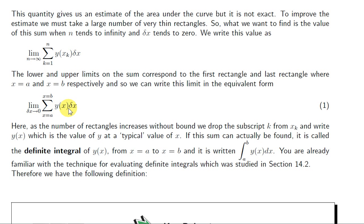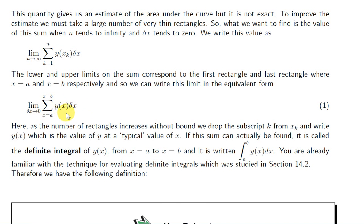We have the same sum as before but using slightly different notation. The first rectangle has area y of a times delta x, so the first value that goes in for x is a. Rather than plugging 1 in for k and calling the leftmost point x1, we can just plug in a. Then we would add delta x onto a, so the next value in this sum would be y at a plus delta x times delta x, then we add on another delta x, and so on.